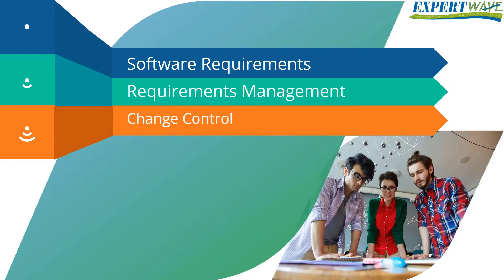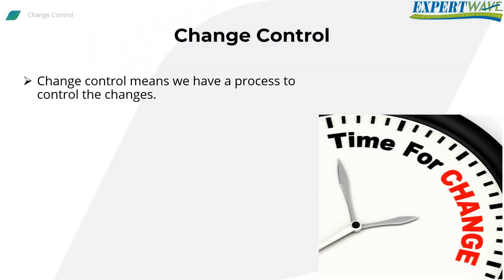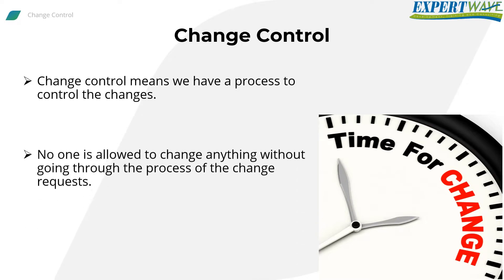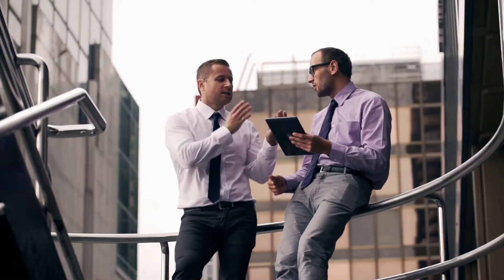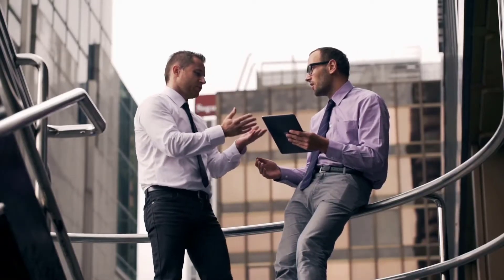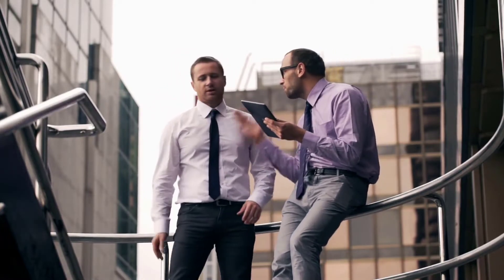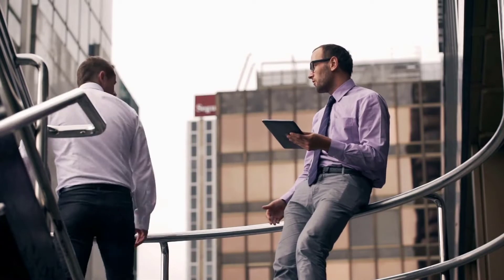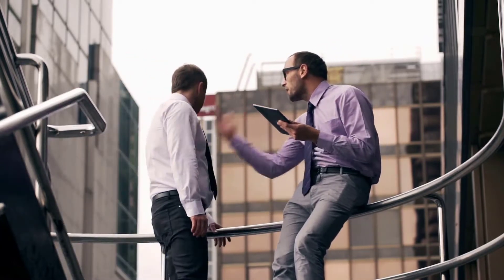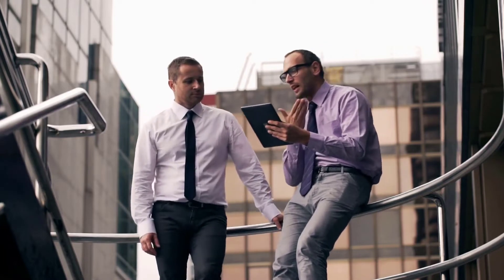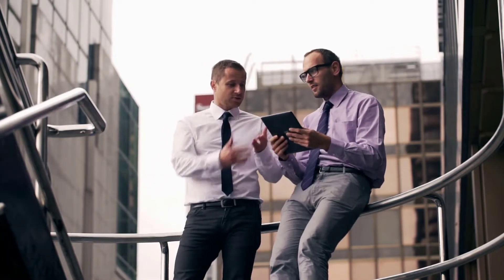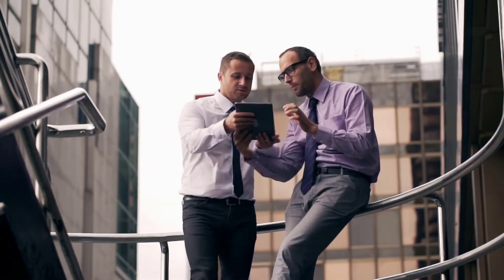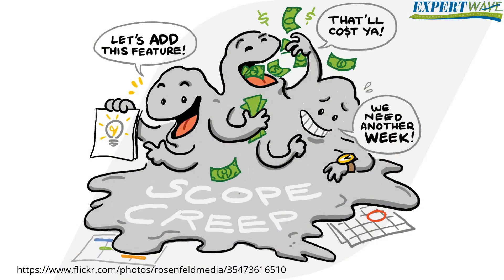Change control means we have a process to control changes. No one is allowed to change anything without going through the process of change requests. Many times I faced a situation where a developer added something to the scope of requirements without telling anyone, just because he felt good about it or because the code was already available. Usually the developer has good intentions, but software can't be managed with intentions. Adding unnecessary features is a common phenomenon known as feature creep or scope creep.